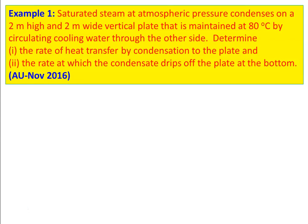Example number one: Saturated steam at atmospheric pressure condenses on a 2 meter high and 2 meter wide vertical plate maintained at 80 degrees Celsius by circulating cooling water through the other side. Determine the rate of heat transfer by condensation to the plate and the rate at which the condensate drips off the plate at the bottom. This is from the university question paper November 2016. All problems solved in this lecture series are taken from the university question papers, so students will gain confidence for university examinations.